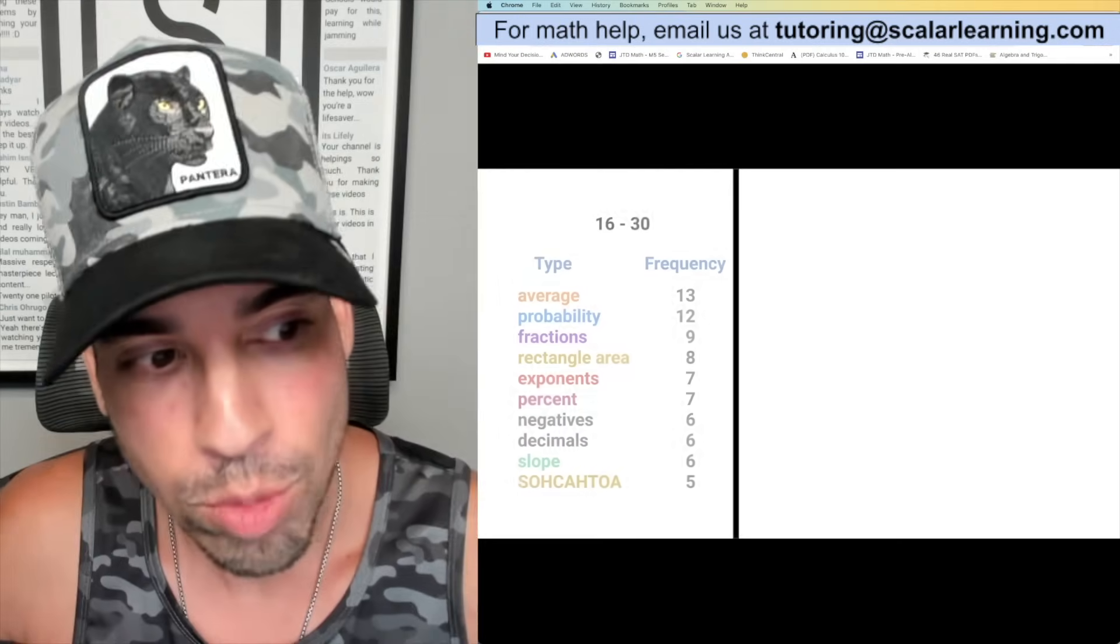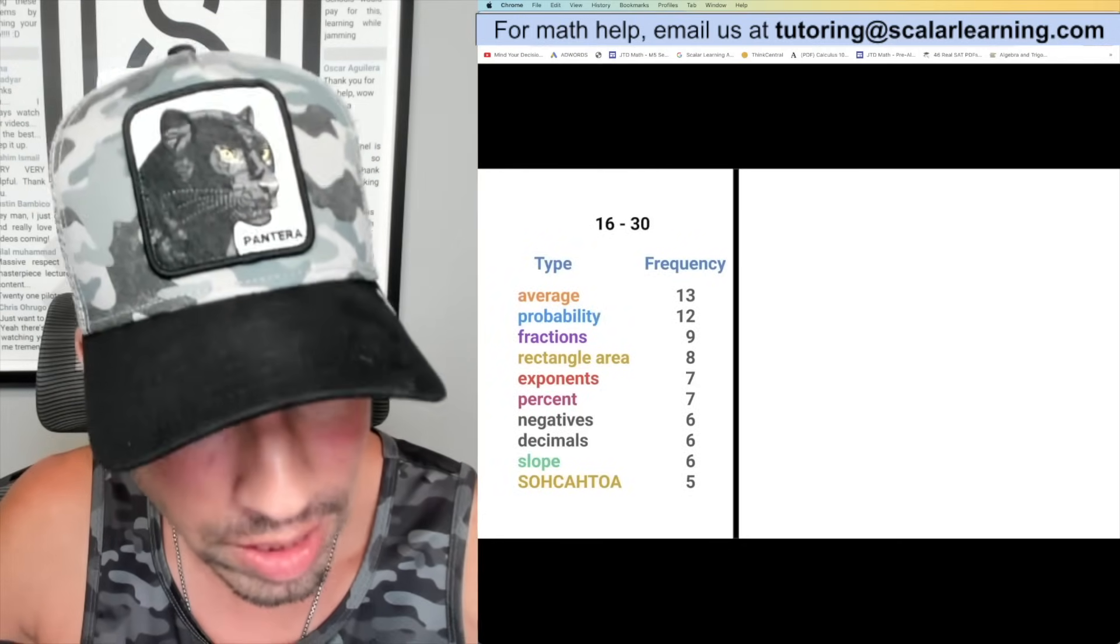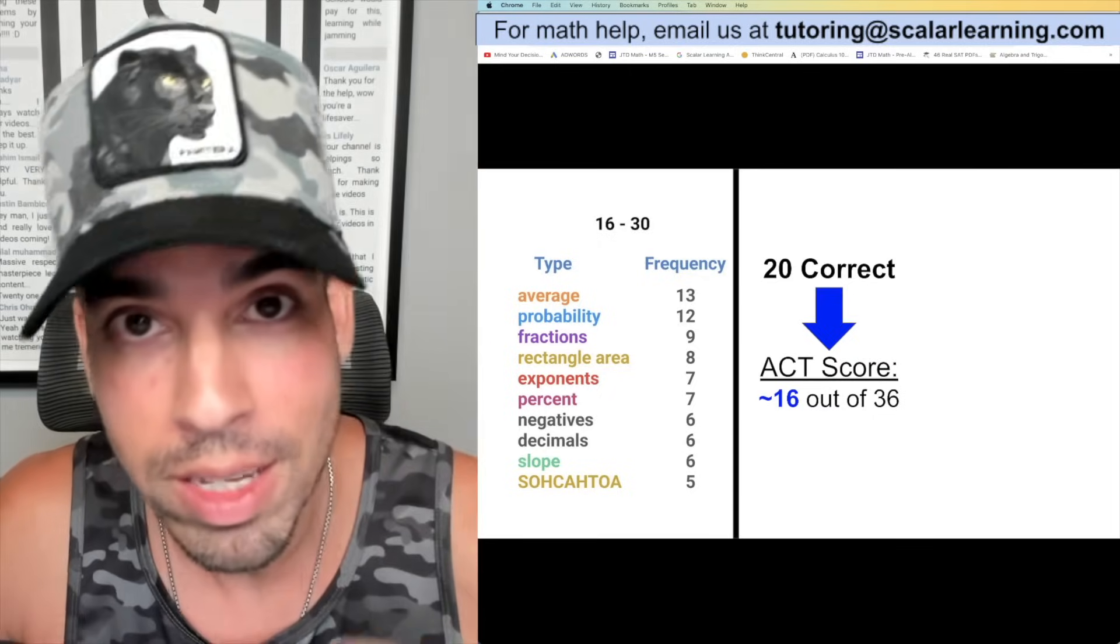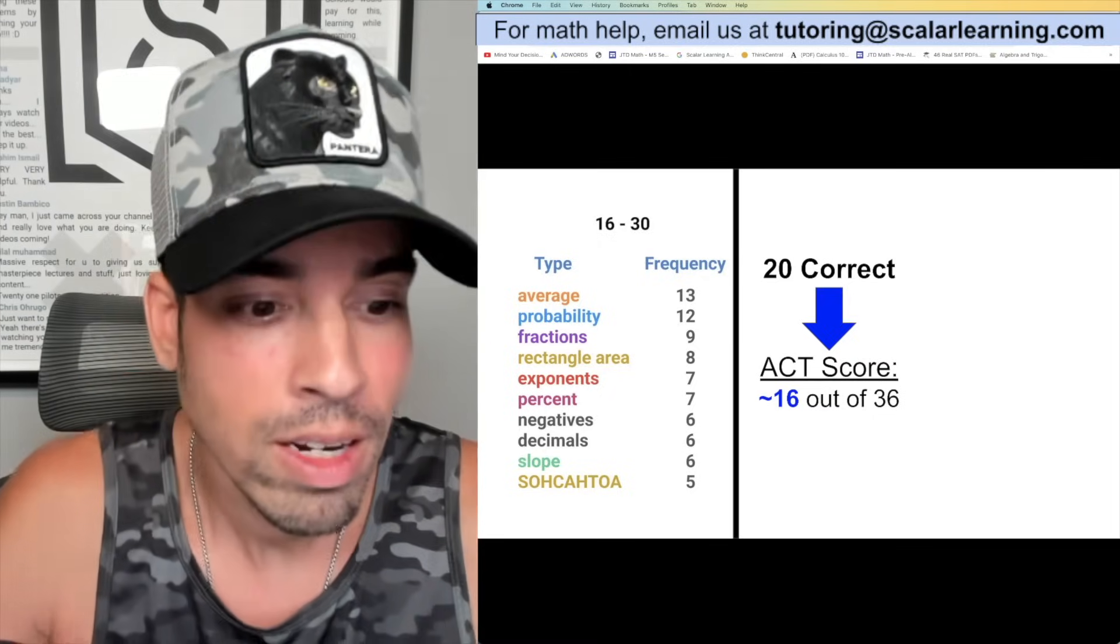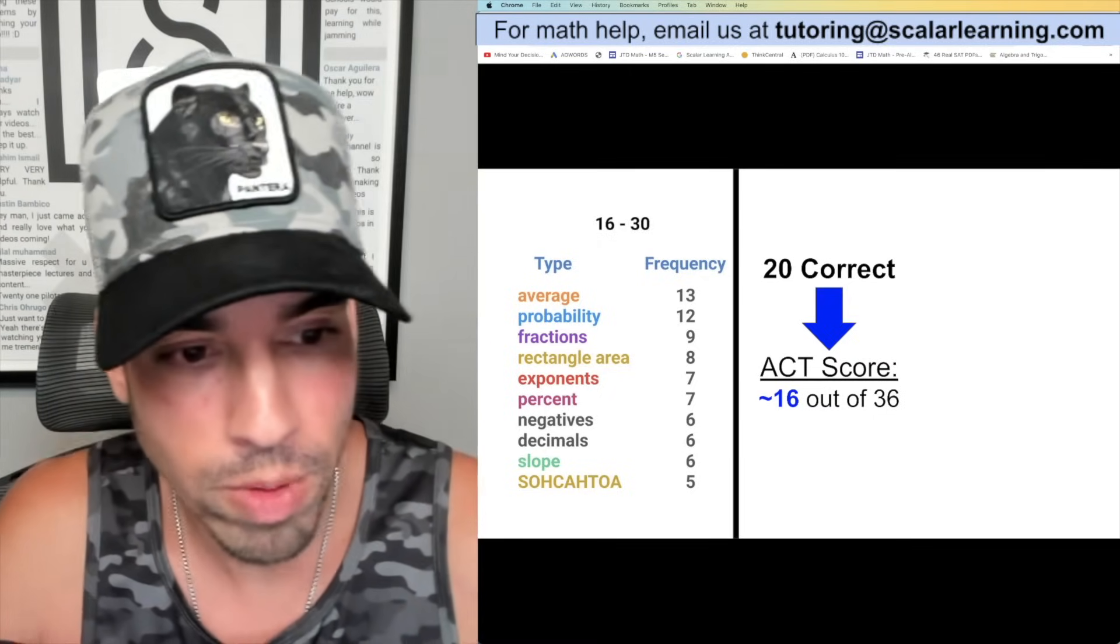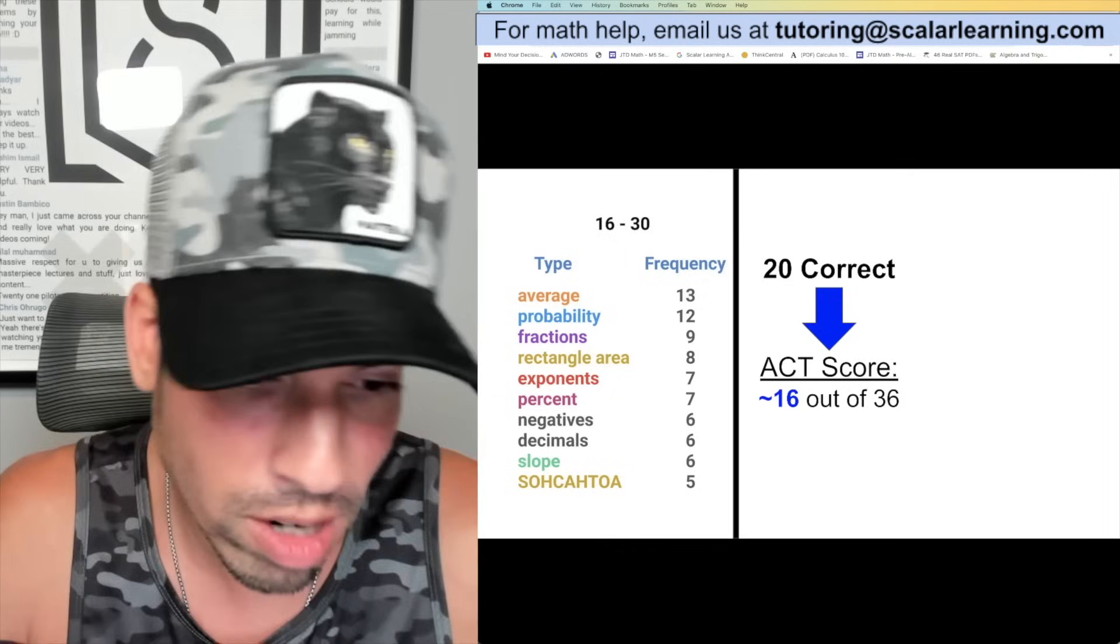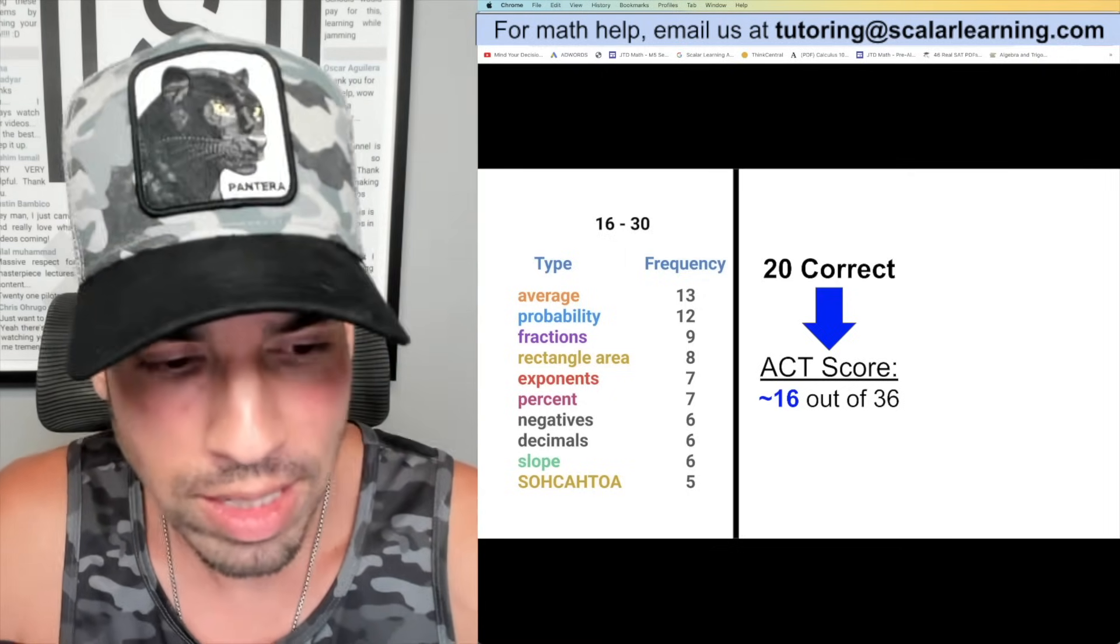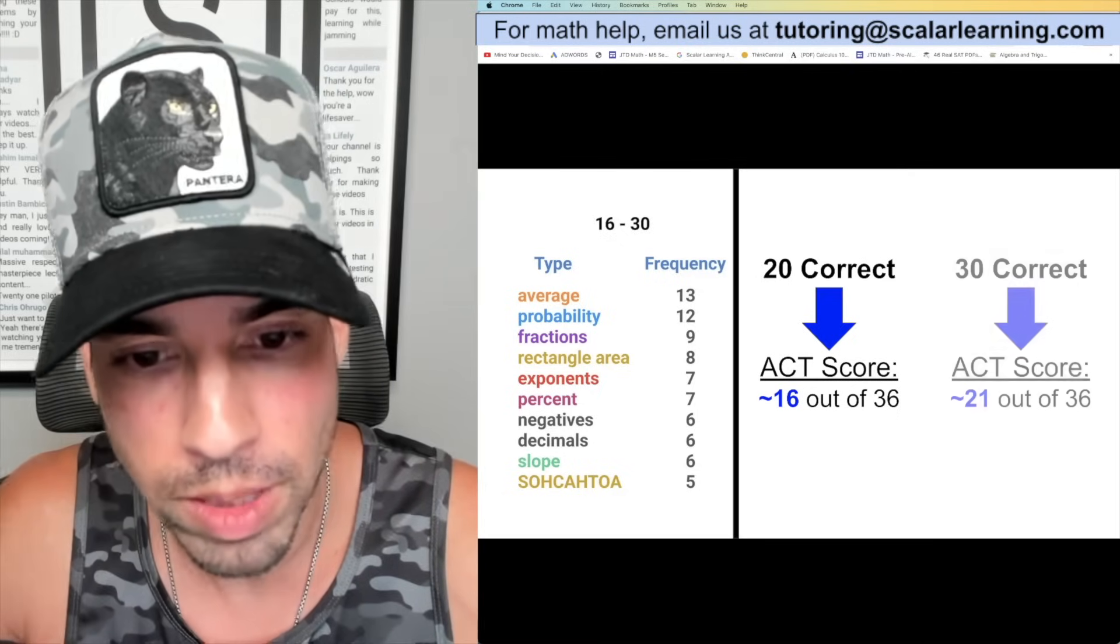Next we're going to look at the next batch of 15, which is 16 through 30. If you're aiming for around 20 correct, that's going to be somewhere approximately a 16. And if we're at that max 30 correct, that's going to be a nice ACT score of 21.